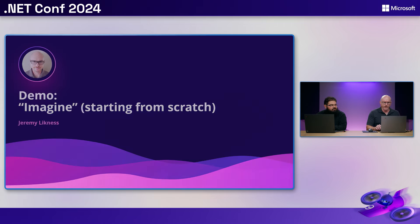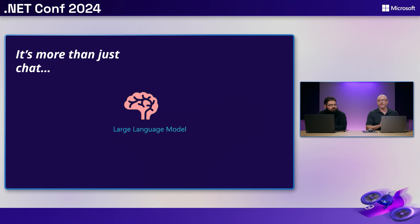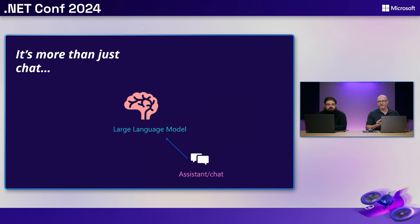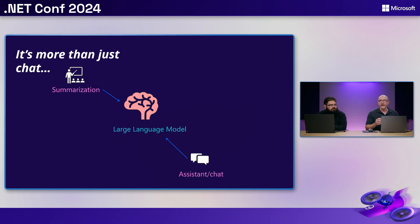Let's talk about how we'd do that. You've probably heard about large language models — these are really the brains behind a lot of AI experiences. The most common example is the assistant in chat, and that's great, but there is so much more a large language model can do. It can do things like summarization, which I'm going to focus on in a moment.